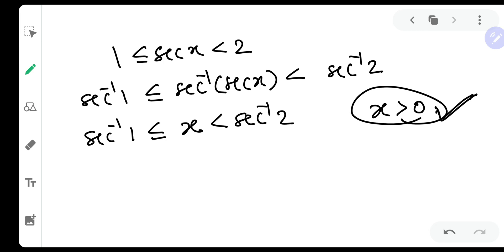Now sec inverse one is zero, sec inverse two is pi by three. Now for negative, you have to just look at it this way. For negative, the derivative will be one upon x under root x square minus one, but our x is all negative. So you can say that x lies between minus pi by three to zero, where zero is inclusive and minus pi by three cannot be inclusive.